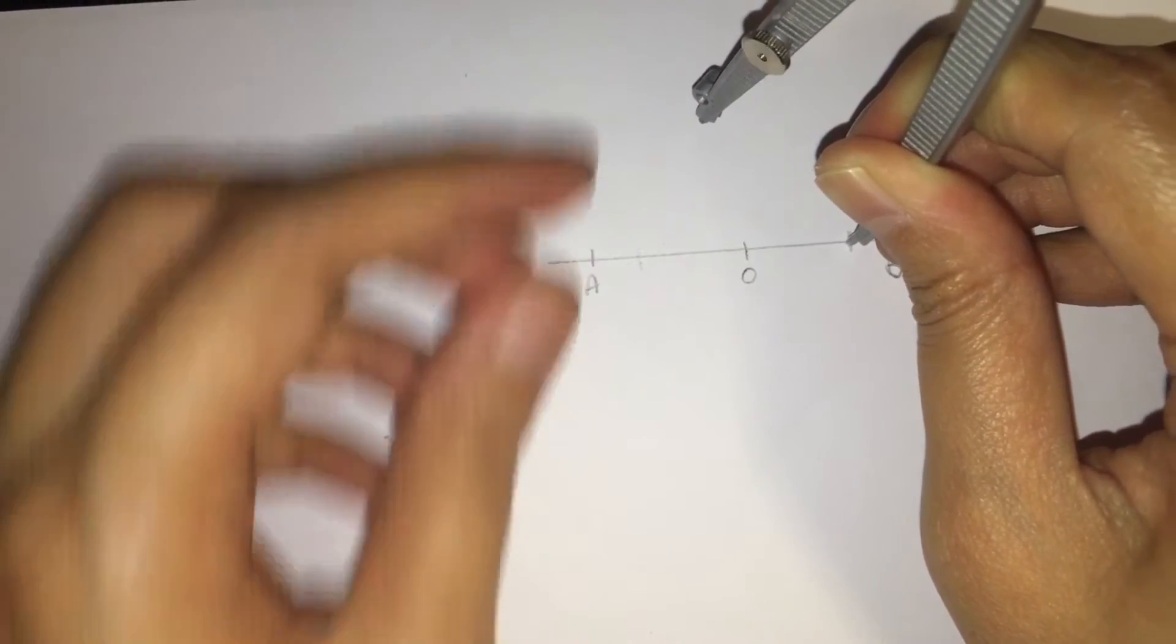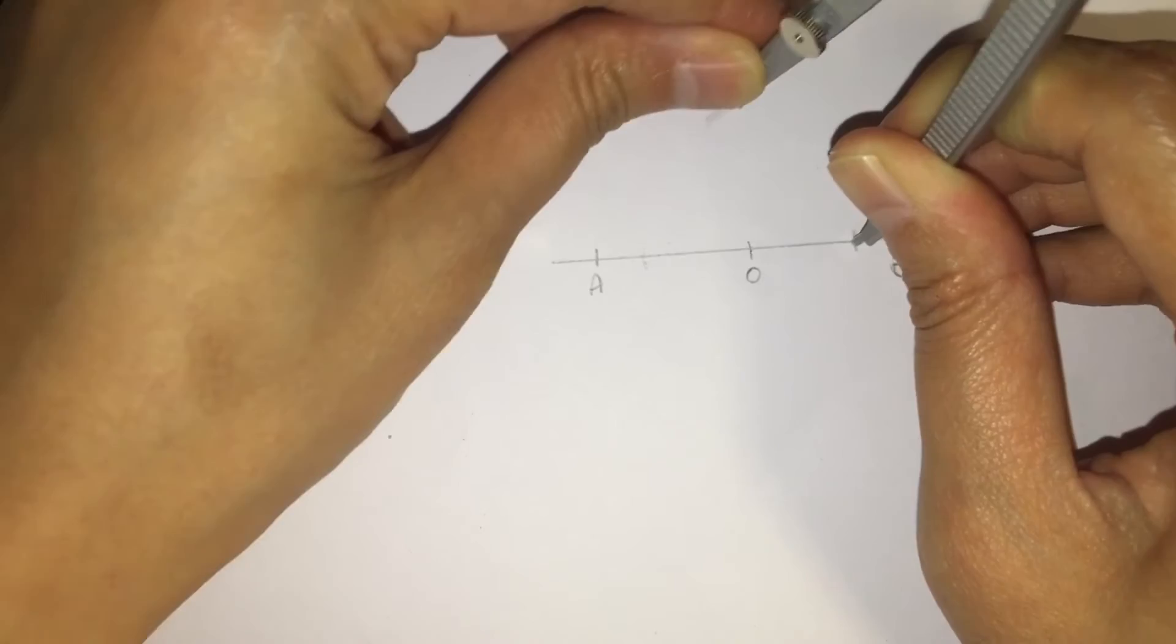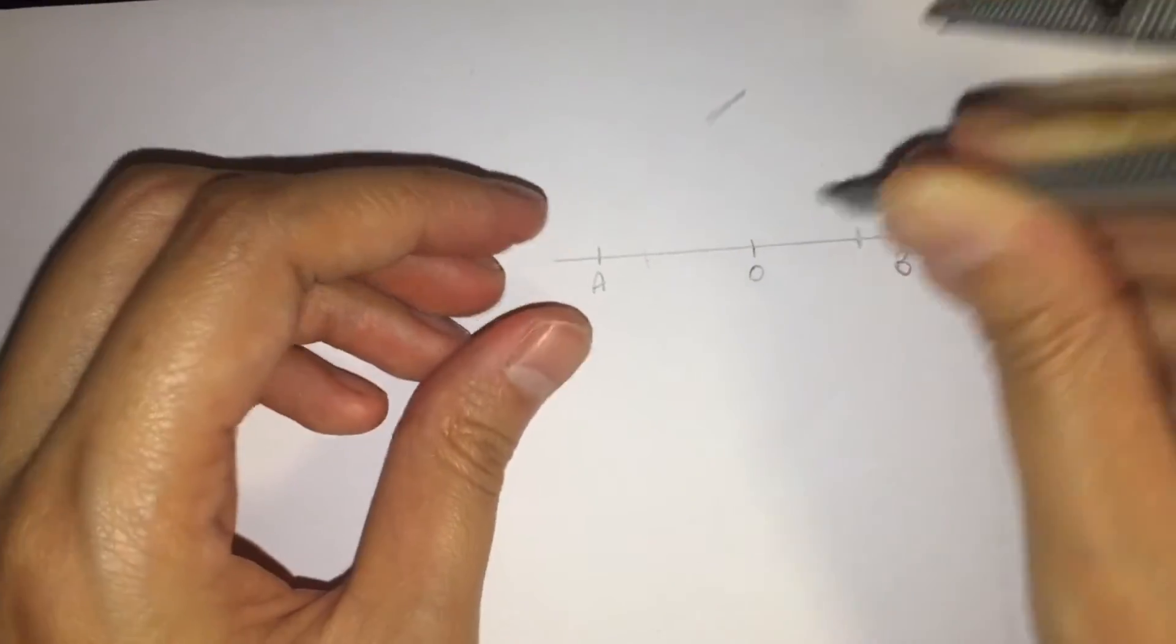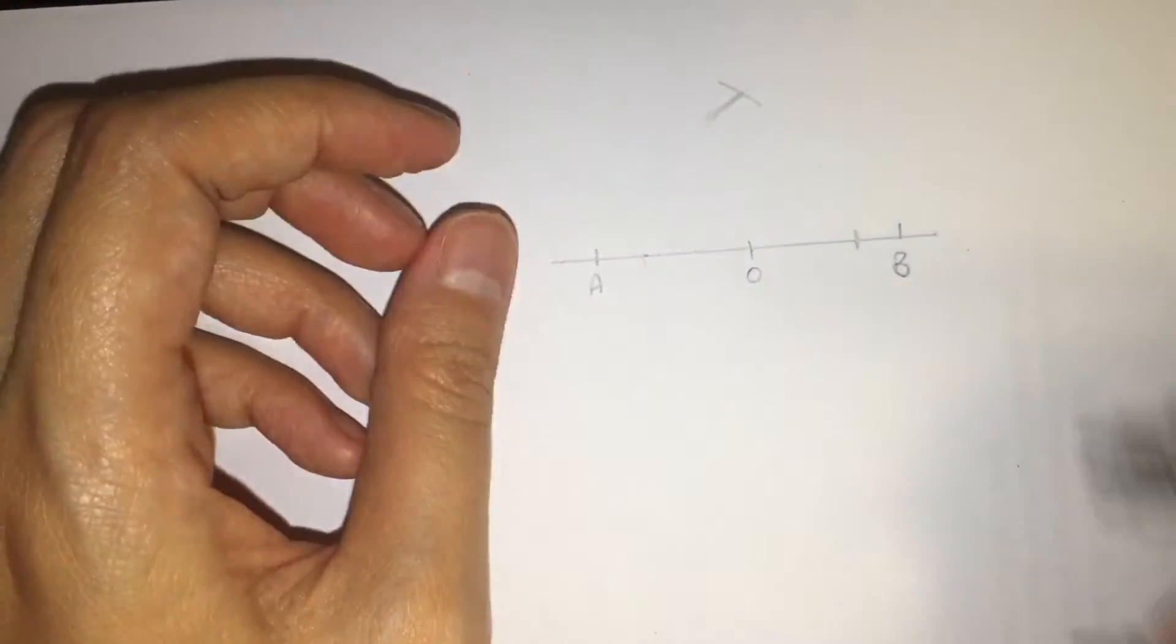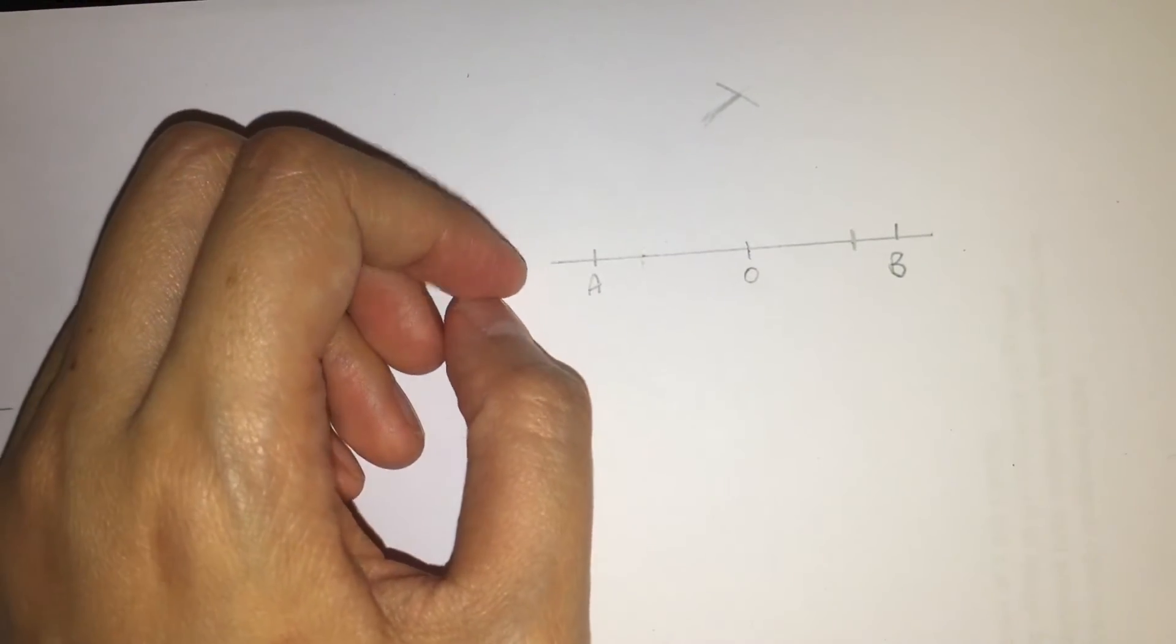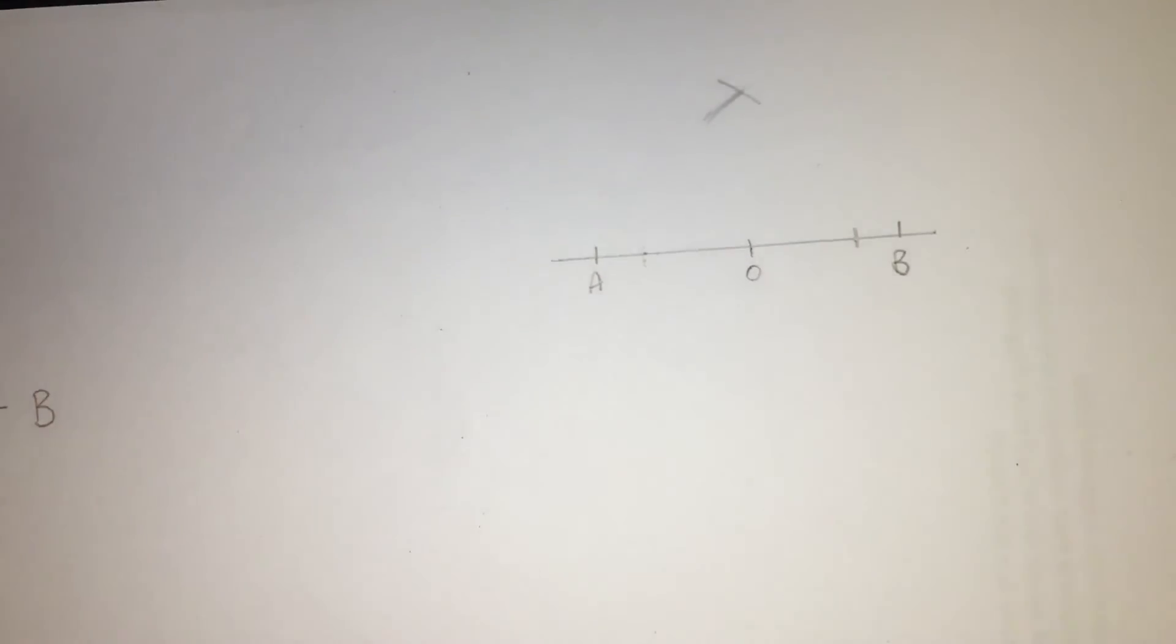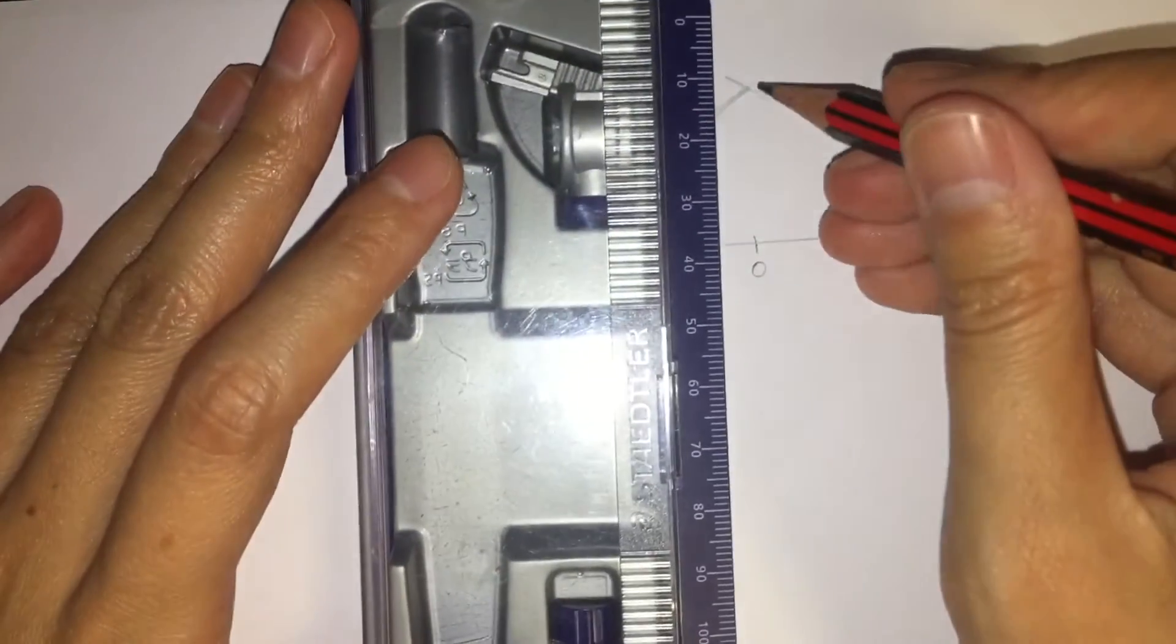And start from the new mark that we just marked, and try to get a cross mark up here. And the intersection here, join that with O.